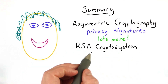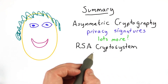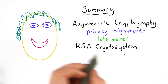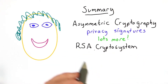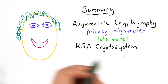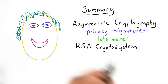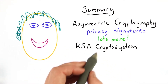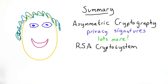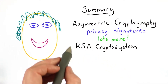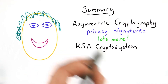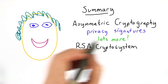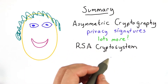We talked about the RSA cryptosystem, which is probably still the most widely used public key cryptosystem, and there are billions of transactions going on every day using RSA. Nearly every time you use a secure website, it's very likely that RSA is being used. And we'll talk about the protocol for that next unit.